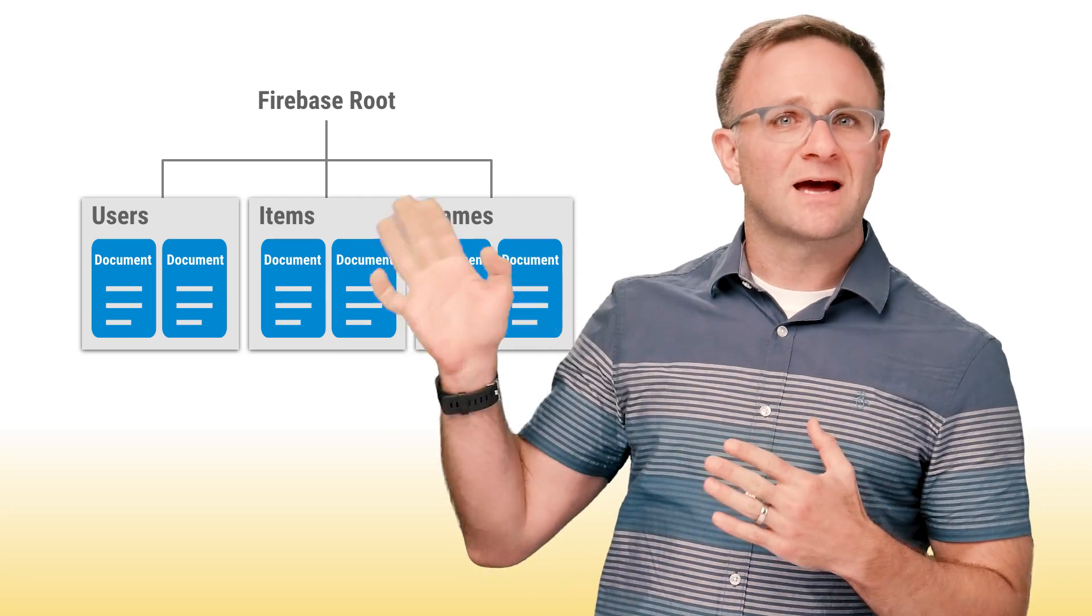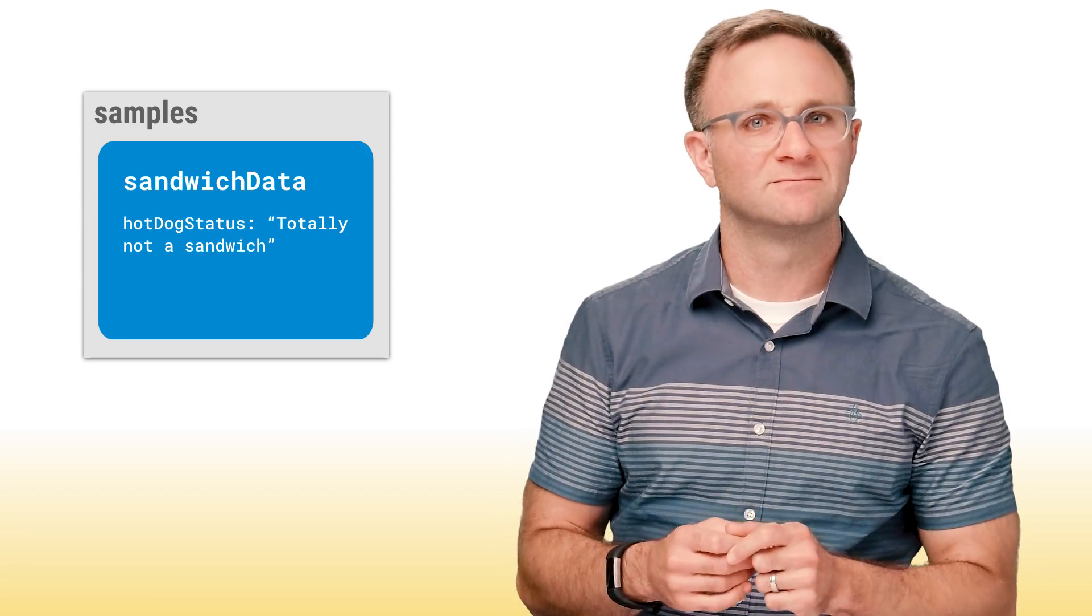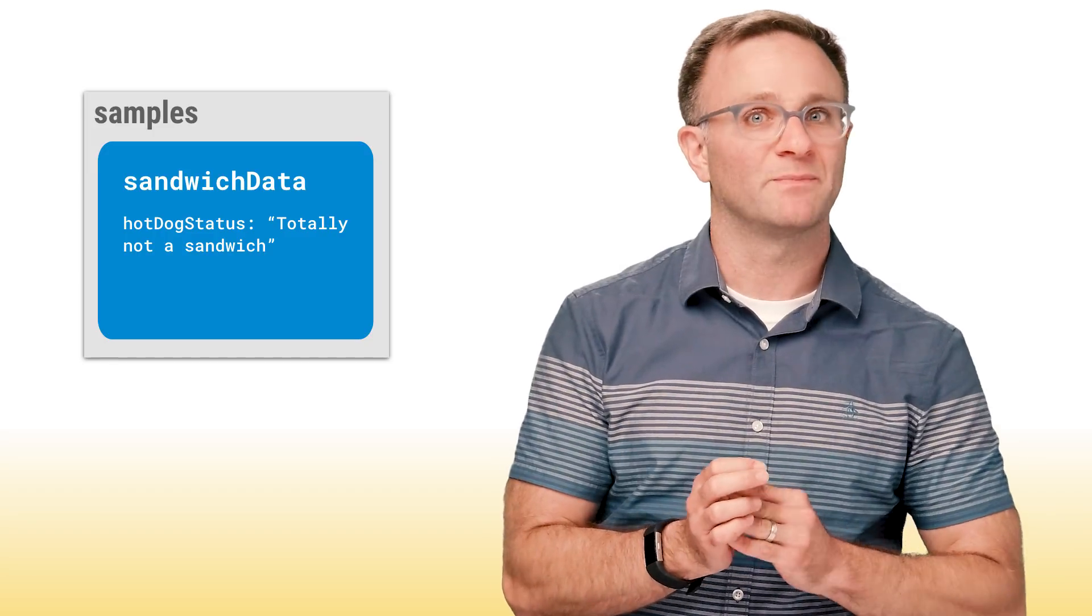So looking at our app, I think the top level is going to start with a collection that I'm calling samples. This will then contain one single document called sandwich data. And this document will itself have one key value pair, or field, called hot dog status. Make sense? All right. Let's start building.